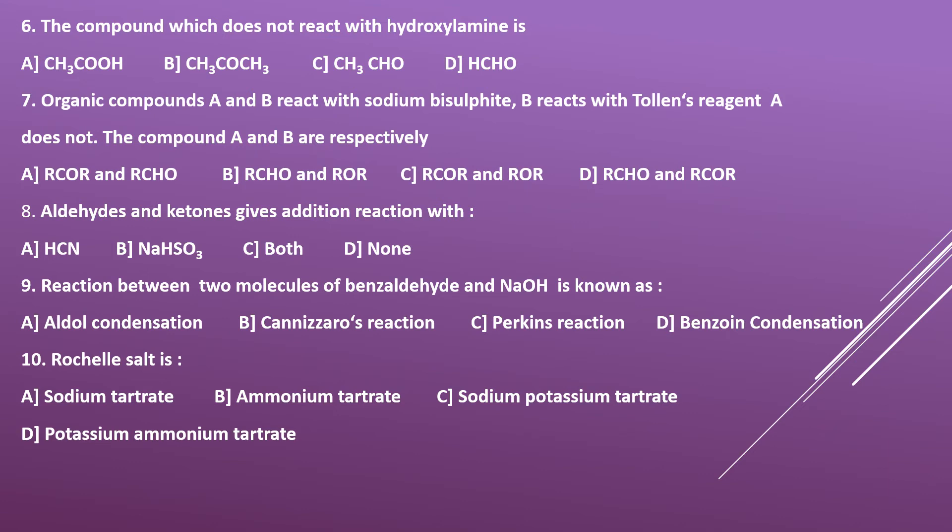Question ten: Rochelle salt is — options: A) sodium tartrate, B) ammonium tartrate, C) sodium potassium tartrate, D) potassium ammonium tartrate. We encountered Rochelle salt under Fehling's reagent. Fehling's solution is Fehling's A plus Fehling's B, where Fehling's B is sodium potassium tartrate, called Rochelle salt. The correct answer is C.